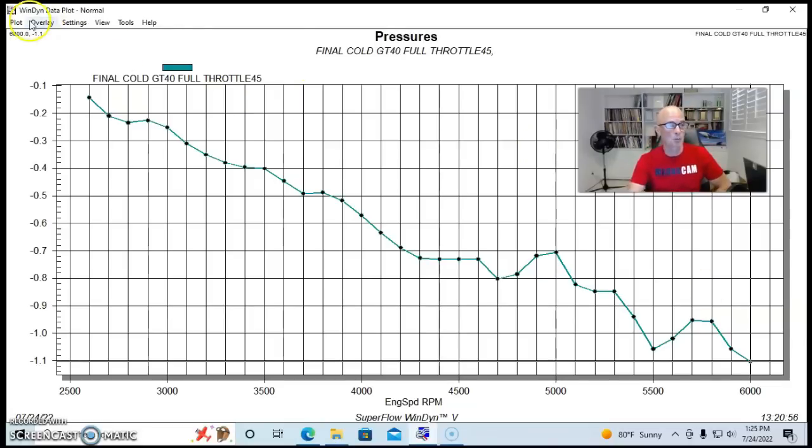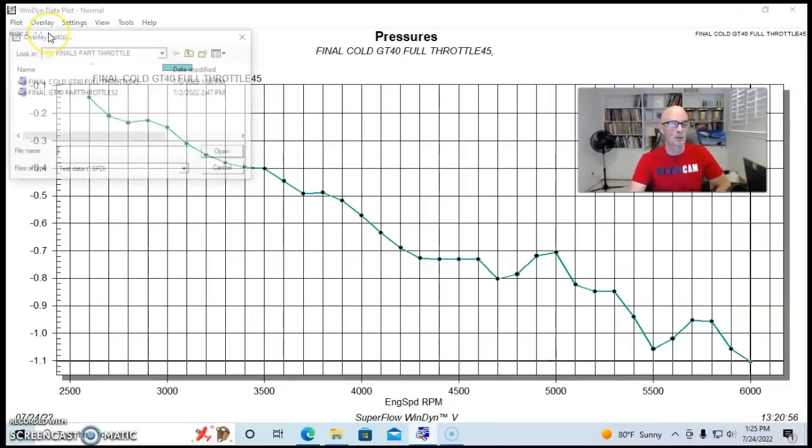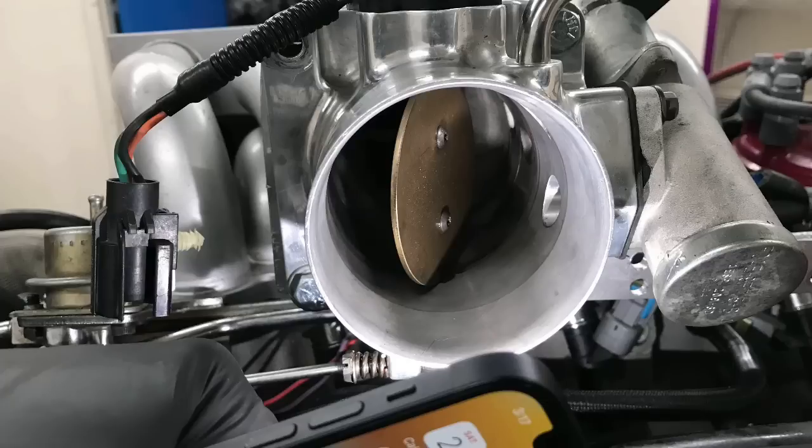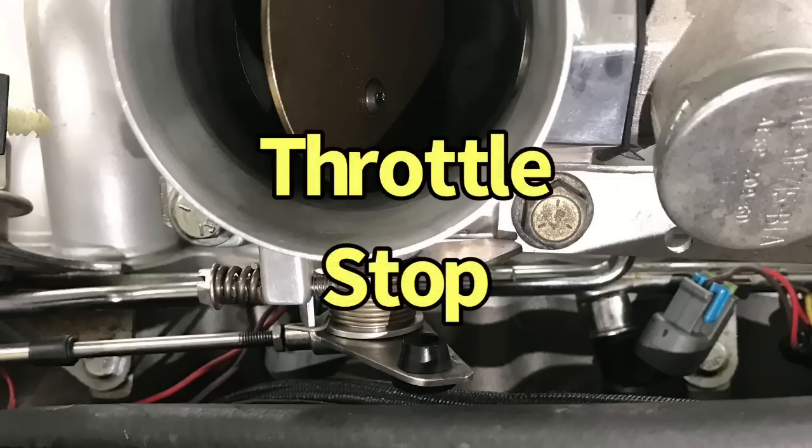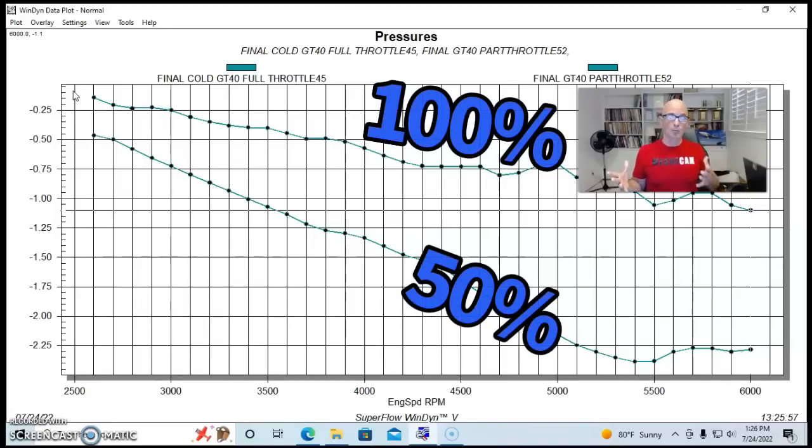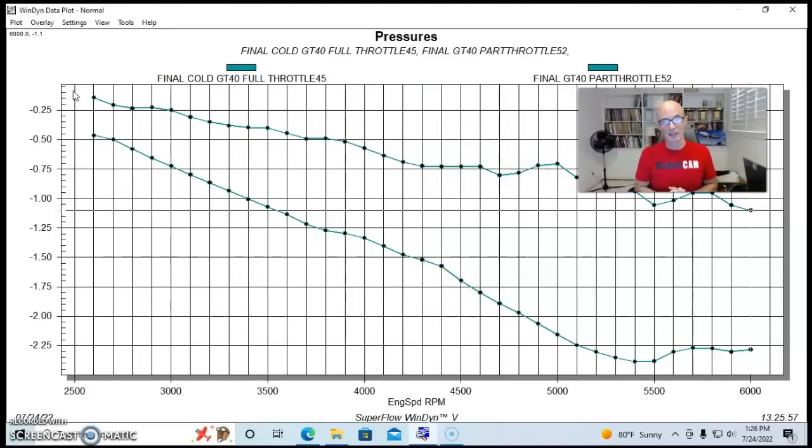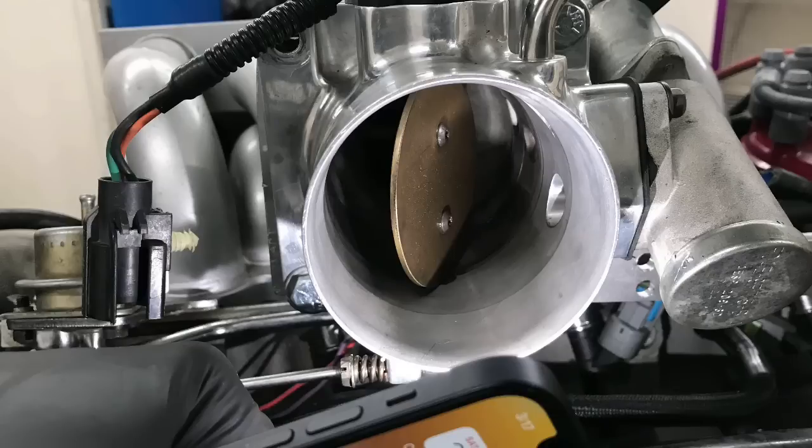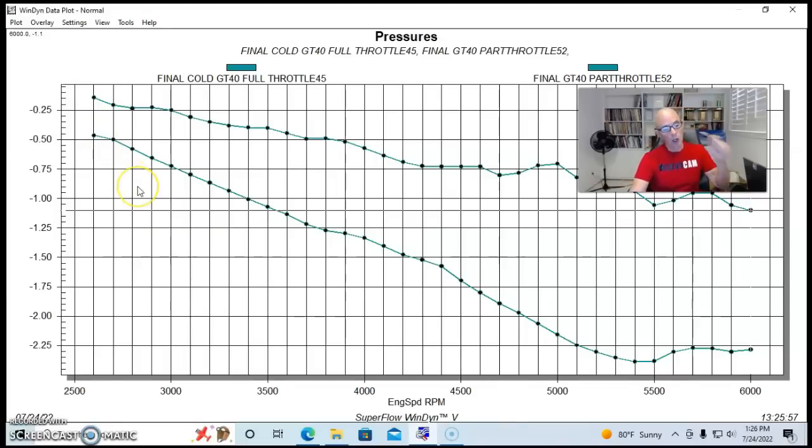And if we compare this to what happened when we ran this thing with the throttle at 50% open, here is our part throttle number, and that is the bottom one. And you can see there was a lot more vacuum present, and this is something that we expected, there was a lot more vacuum present at part throttle. In fact, there was more vacuum present at part throttle, even at our load in point of 2600 RPM.